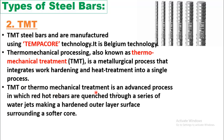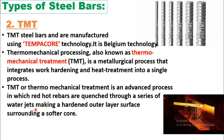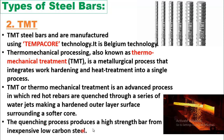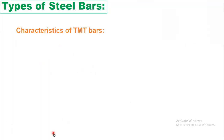In the TMT process, red-hot rebars are quenched through a series of water jets, creating a hardened outer layer surrounding a softer core. This quenching process produces a high-strength bar from an inexpensive low-carbon steel.